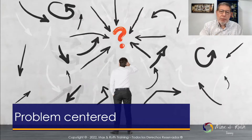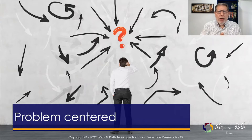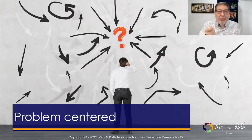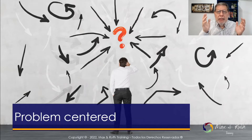The first principle — principle number one — is that the course must be problem-centered. That means it must be developed to solve a real-world, real-life problem that the participants have. If the course doesn't solve a real problem of the participant, then the course won't be successful. As marketers say, you have to find your audience's pain points so that you can give the solution, the medicine for that pain.